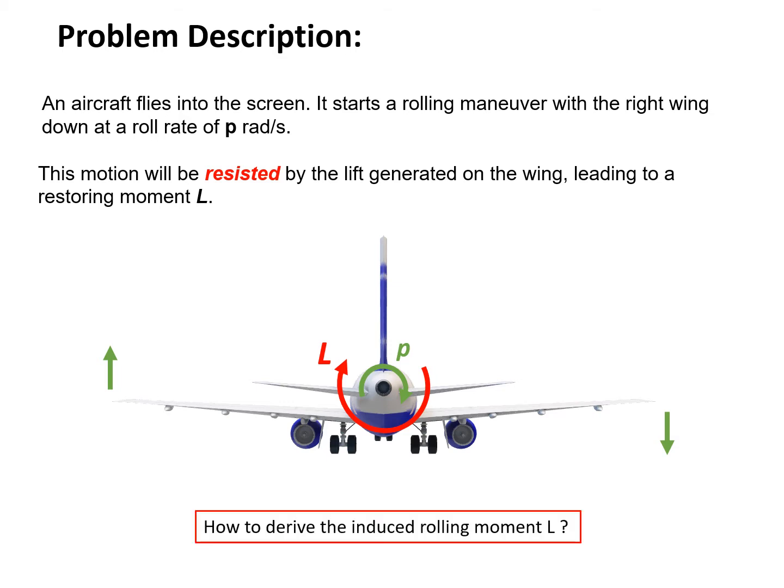So now we have the question: how to derive the induced rolling moment? This is a key issue in the derivation of CLP. Now let's start the derivation. We are replacing the nice view of the aircraft through this simplified view. We generally show this aircraft as a tube and a plane system.